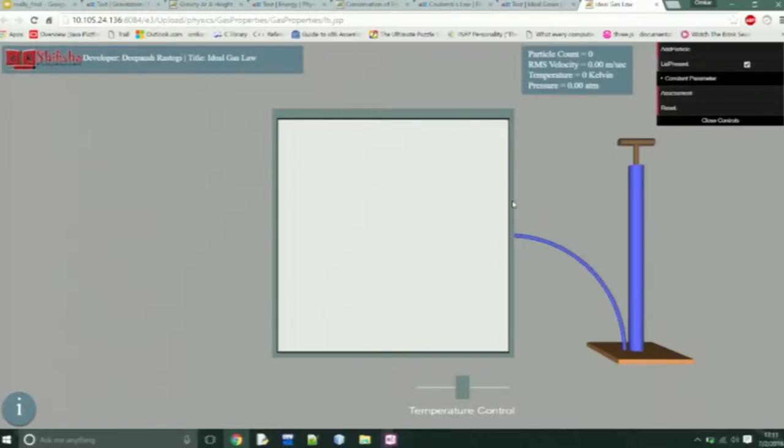Here you can see the basic layout of the experiment. That's the box in which the particles will be added, and in this info you will be able to see the instantaneous values of all the parameters involved.